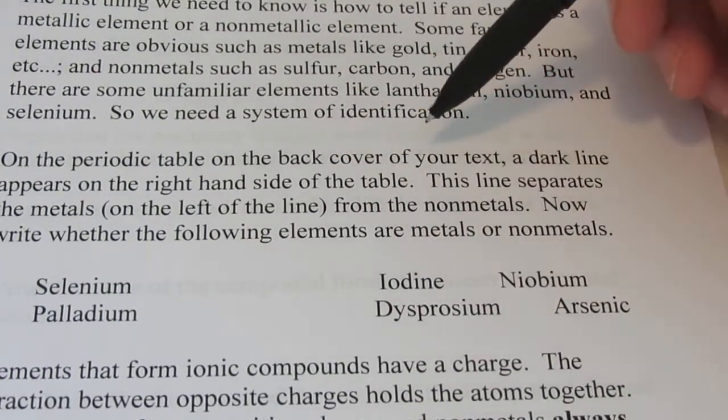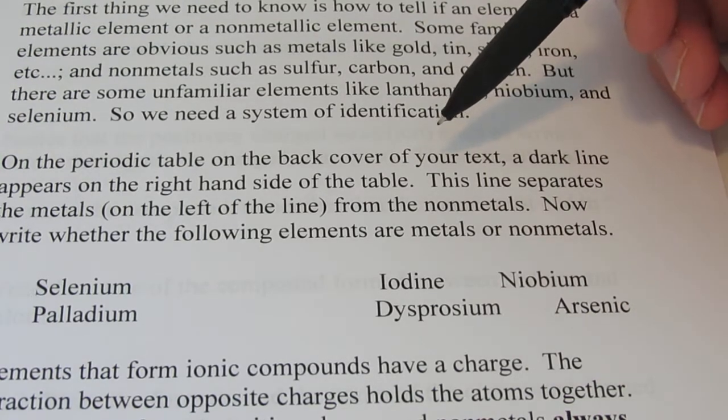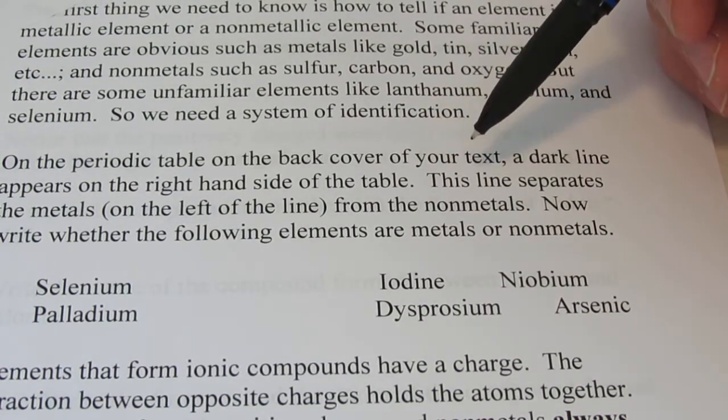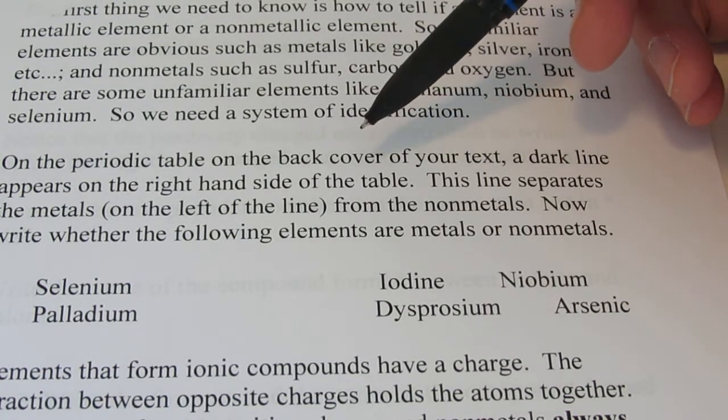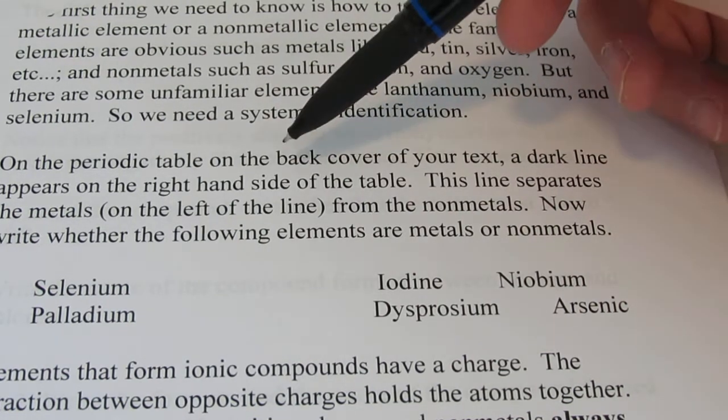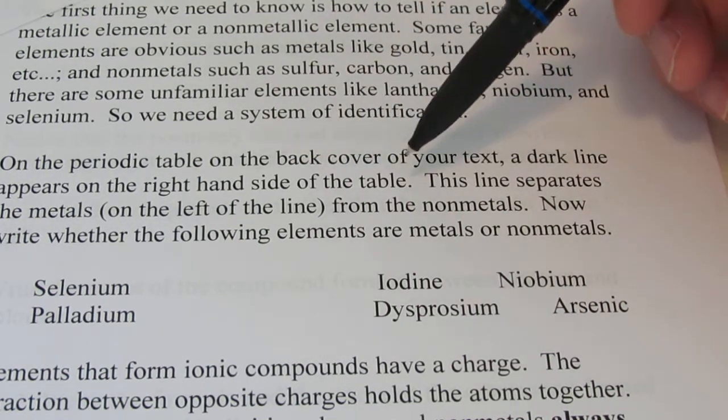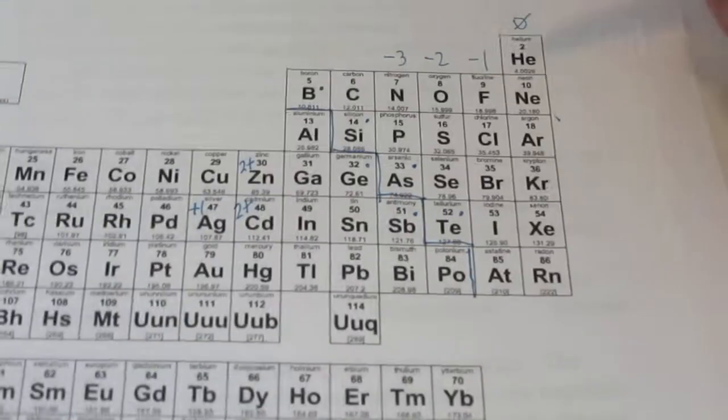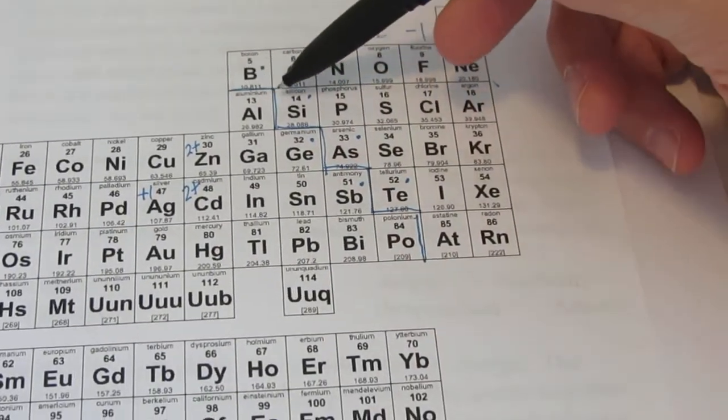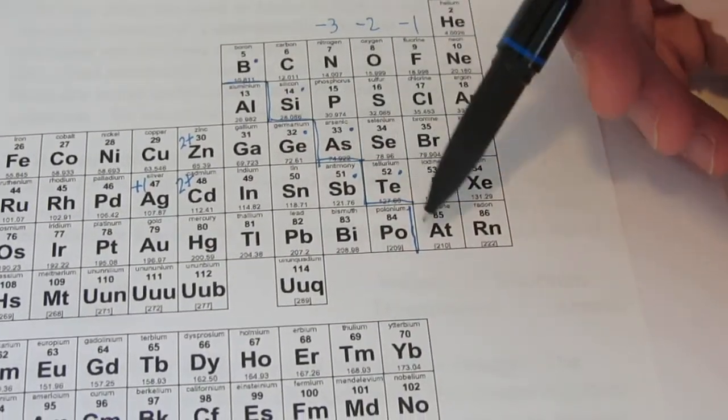Now, on the periodic table, either on the back cover of your text or the very front of your manual, you will see a dark line that appears on the right-hand side of the table. This line separates the metals from the non-metals. So here's that line we drew in.